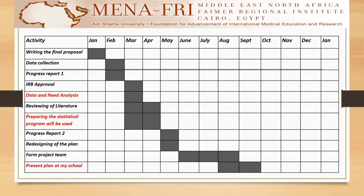The Gantt chart shows that after regaining IRB approval, data and needs analysis were done. After reviewing the literature in March and April, I started to form my team. I had only one colleague who wanted to share the project with me, which had a negative impact as my other colleagues were overwhelmed due to recording and teaching.